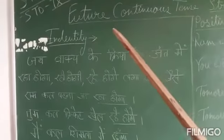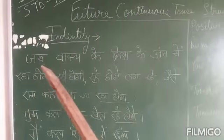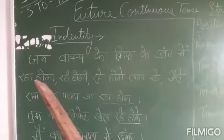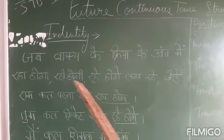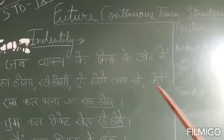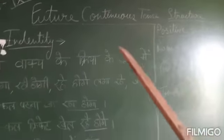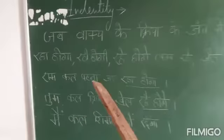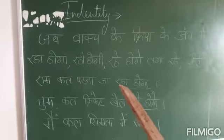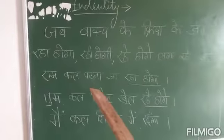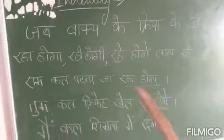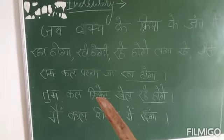The identity of future continuous tense is that the action will be ongoing in the future. For example: You will be playing cricket tomorrow.